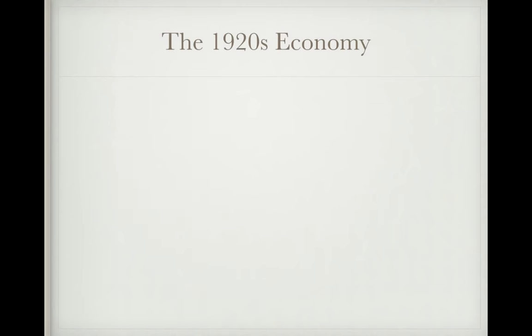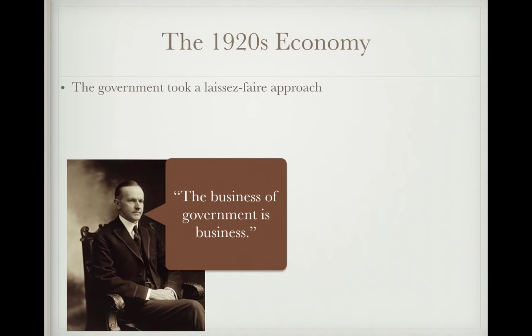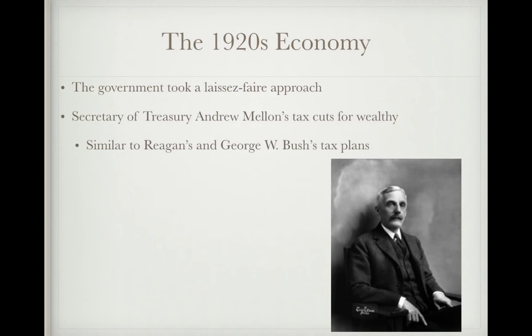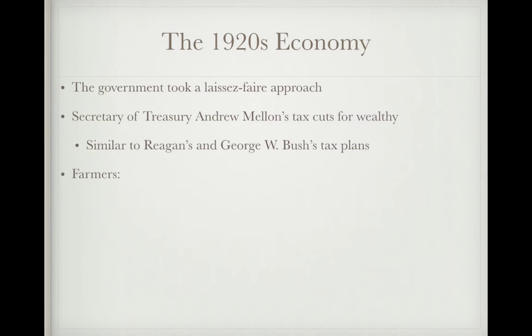The 1920s economy operated under a laissez-faire approach. Calvin Coolidge famously said 'the business of government is business,' summing up his view that government's purpose was to help businesses. Secretary of the Treasury Andrew Mellon served under Harding, Coolidge, and Hoover — from 1921 to 1932 — and advocated tax cuts for the wealthy, similar to Ronald Reagan's and George W. Bush's tax plans of the 1980s and early 2000s.